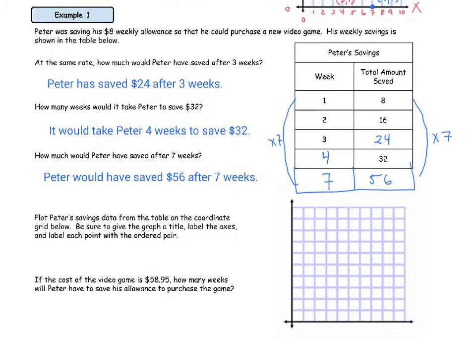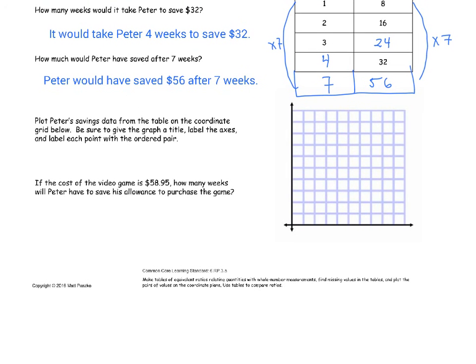The next question says, plot Peter's savings data from the table on the coordinate grid below. Be sure to give the graph a title, label the axes, and label each point with the ordered pair. So let's go ahead and do that now. Before we plot some of these points, let me just explain how we ended up labeling our graph. My x-axis I labeled weeks. That's my first column. So I labeled my x-axis weeks. Note that I did start at zero still. I did start at zero, and I moved all the way to the right to get 10.